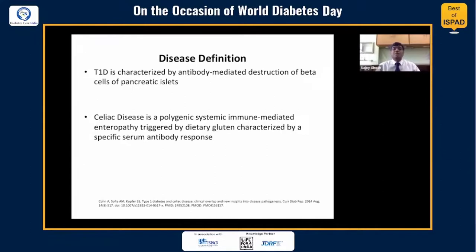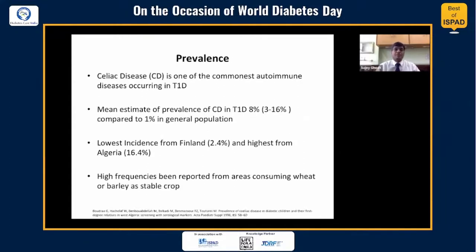Type 1 diabetes, as we know, is characterized by antibody-mediated destruction of the beta cells of the pancreatic islets. Celiac is a polygenic systemic immune-mediated enteropathy triggered by dietary gluten and is characterized by the presence of specific serum antibody response.